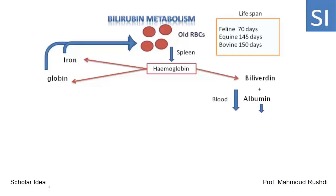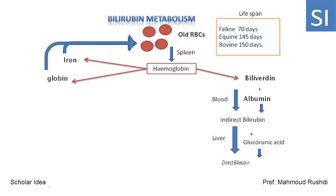The attachment between biliverdin and albumin prevents the loss of biliverdin in the urine, because albumin is not filtered through the glomerular filtration. The combination of biliverdin and albumin is called indirect bilirubin. The indirect bilirubin is transported to the liver, and inside the hepatocytes, the unconjugated bilirubin is conjugated with glucuronic acid, resulting in the formation of direct or conjugated bilirubin.